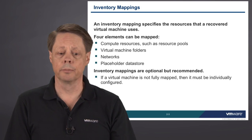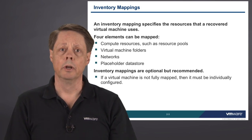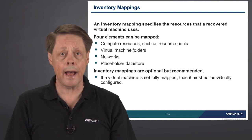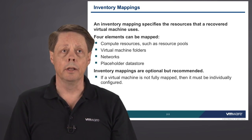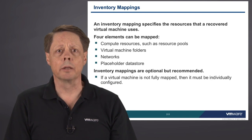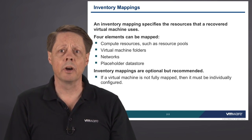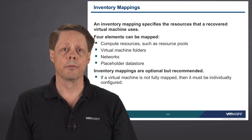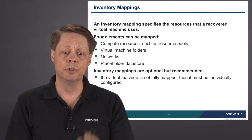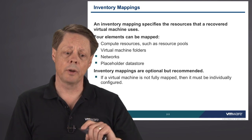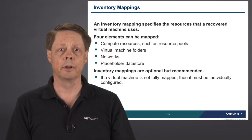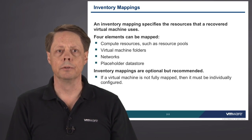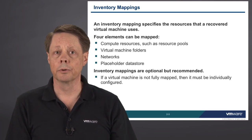For example, if I'd like to protect my database server in New York and I don't already have its network mapped, then when you go to protect it, it will come up and prompt you. If you're protecting 50, 75, or 100 virtual machines, you don't want to go through that manually. I'd like to say 'do this,' and from there on in, if I protect a VM connected to this network, it will automatically be connected to that network when it fails over. The same principle applies to virtual machine folders and resource pools.